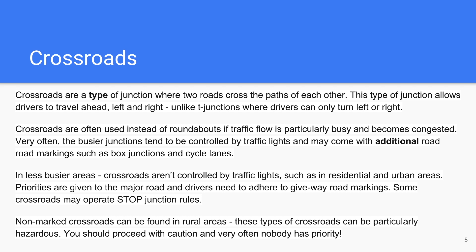Crossroads are a type of junction where two roads cross the paths of each other. This type of junction allows drivers to travel ahead, left, and right — unlike T-junctions, where drivers can only turn left or right.